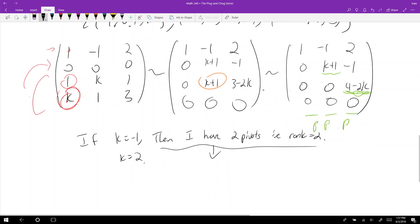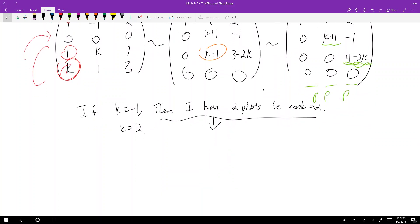All right, the rank of your matrix must equal the number of columns, or the number of pivots are the same. And so if K equals one or K equals two, that doesn't happen. So K cannot equal negative one or two.